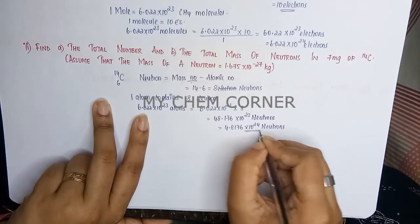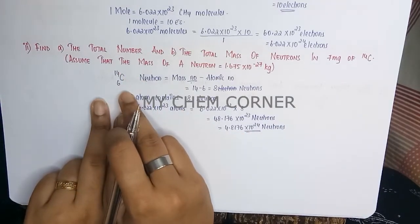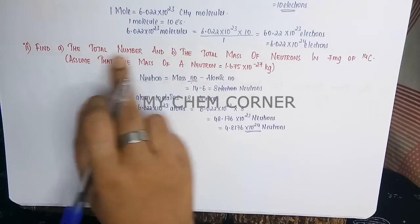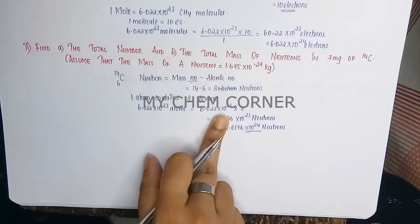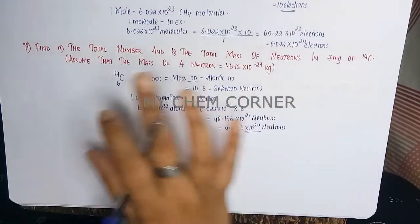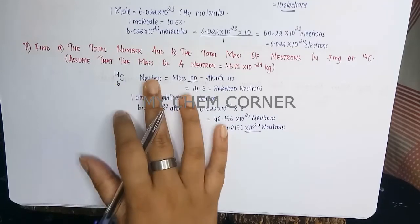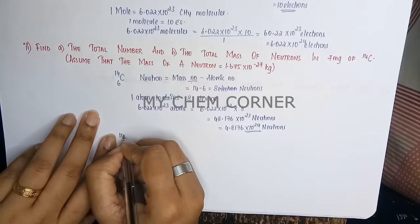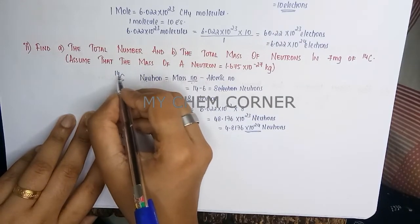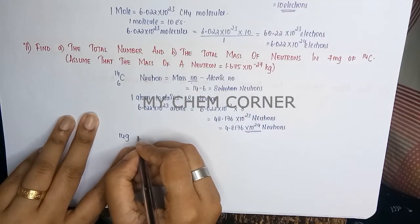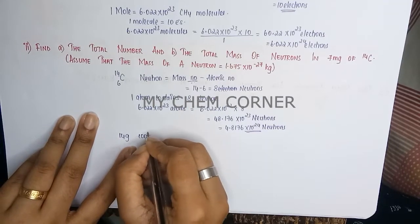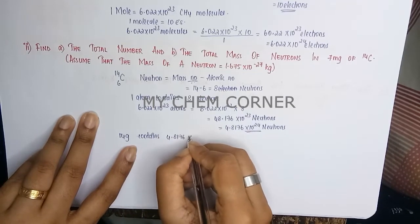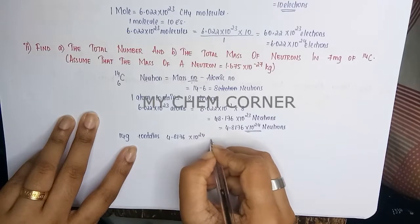So this answers how many neutrons are there in this atom. Next, to calculate what is the total number present in this much, we will first have to do our basic unitary method. So here we say that 14 grams, which is the atomic mass of this particular isotope, 14 grams contain 4.8176 times 10 to the power 24 neutrons.